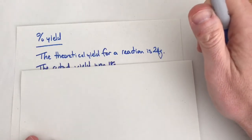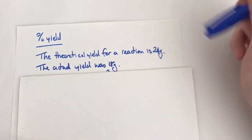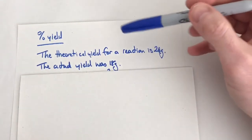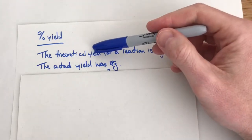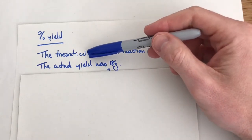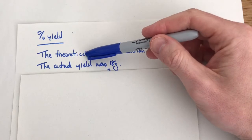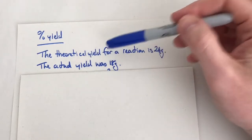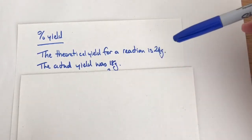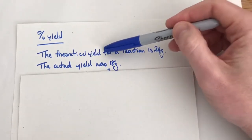We need to understand two values. We need to know the theoretical yield. Theoretical yield is the amount we could make if the reaction worked 100 percent. This is the most you can ever make. The theoretical yield for this reaction here says we should make 24 grams of the product.